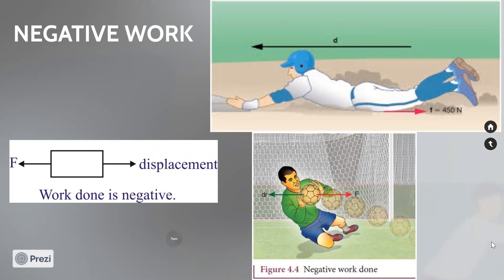The friction force always acts in the opposite direction of displacement. For example, a cricket player sliding to save a run — the friction force acts opposite to the movement of the player, so work done by friction is negative. Another example: a goalkeeper saving a goal. The ball moves in the forward direction but the goalkeeper applies force in the opposite direction, so the work done by the goalkeeper is negative. This is a classic example of negative work.